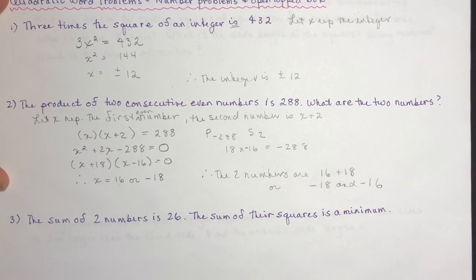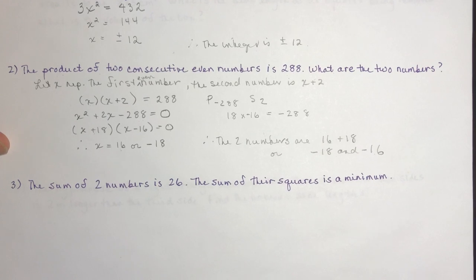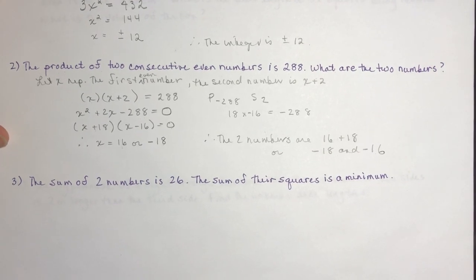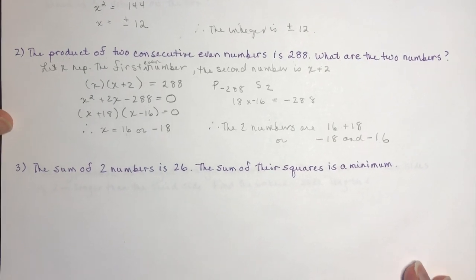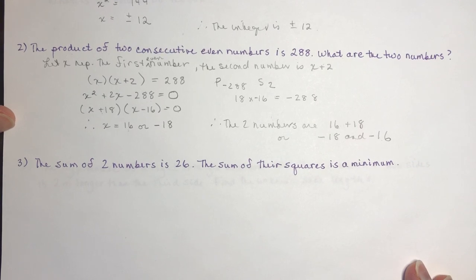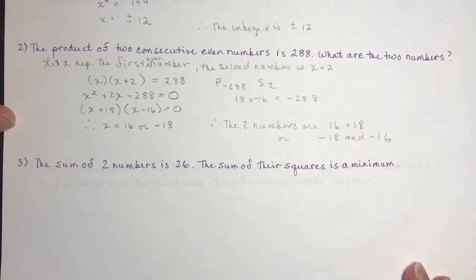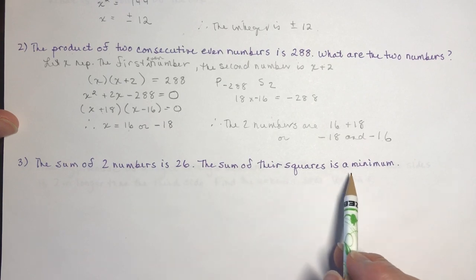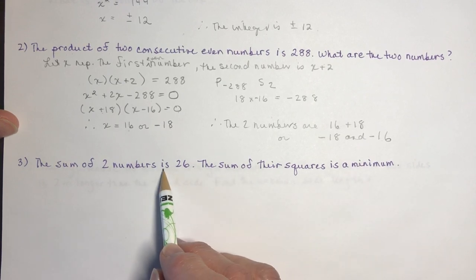Number three: the sum of two numbers is 26 and the sum of their squares is a minimum. This is similar to those perimeter and area questions — we're going to have two equations.